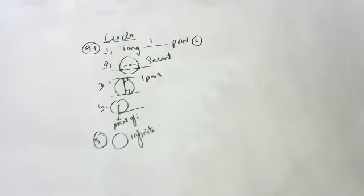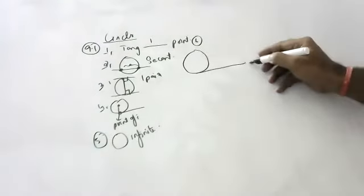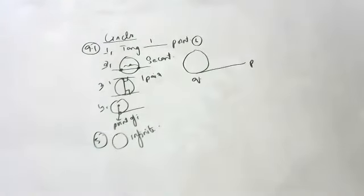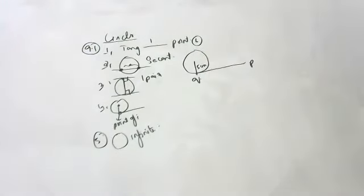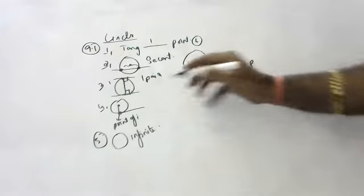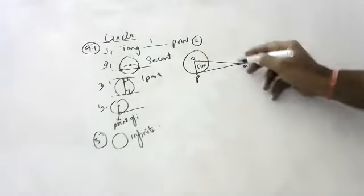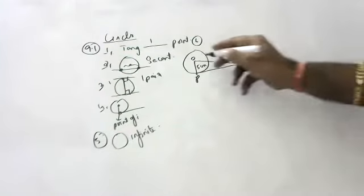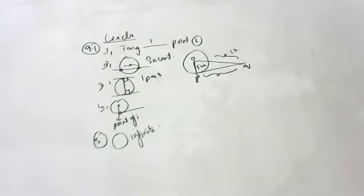Next question. Tangent PQ at a point on a circle with radius 5 centimeters. The distance from center O to point Q is 12 centimeters, and OP is 5. What is the length of PQ? Can we figure that out? This is the question.